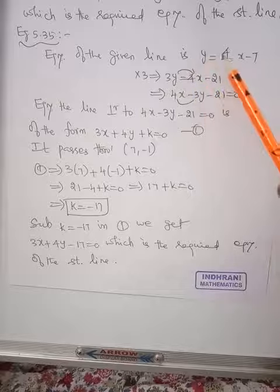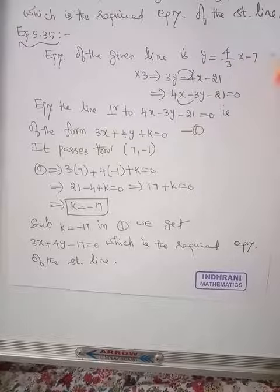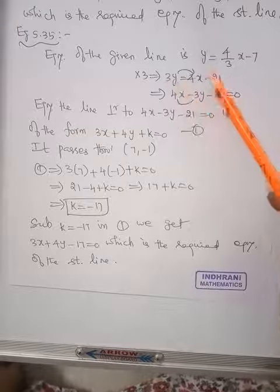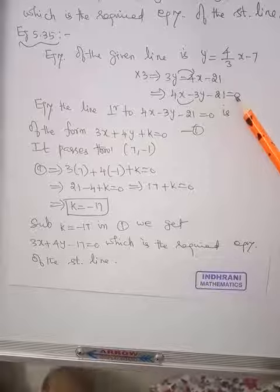Multiply every term by 3. Then 3y equal to 3, the 3s cancel. You will get 4x minus 7 into 3 is 21. So everything to right side, 4x minus 3y minus 21 equal to 0.